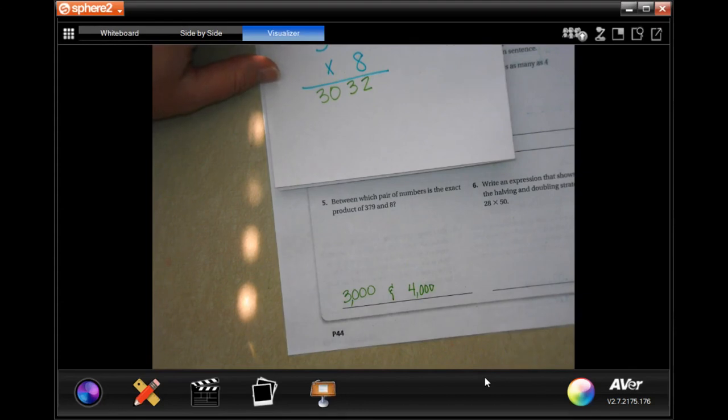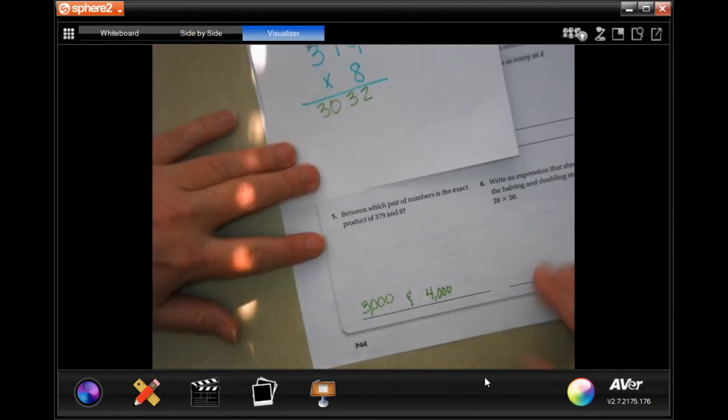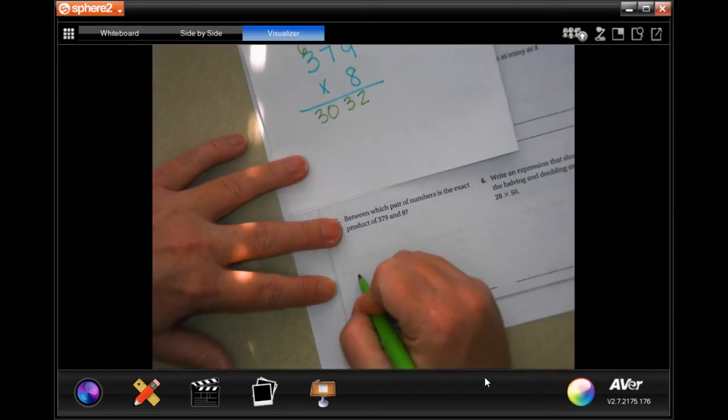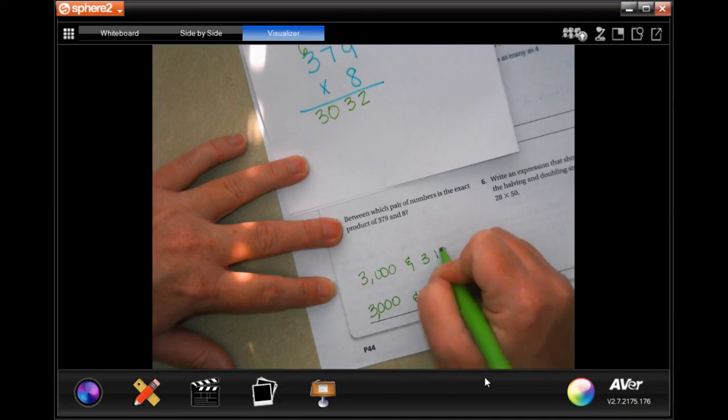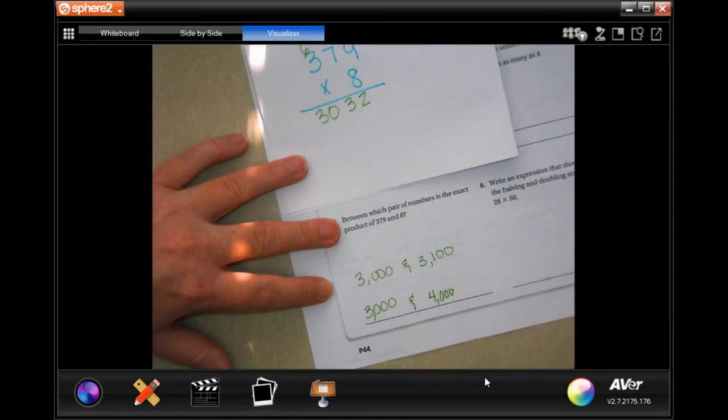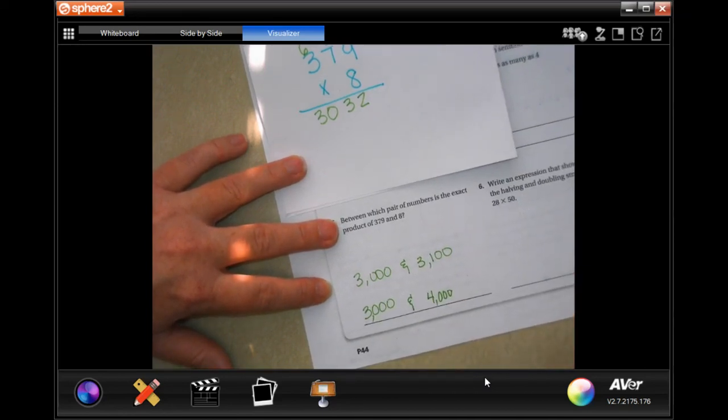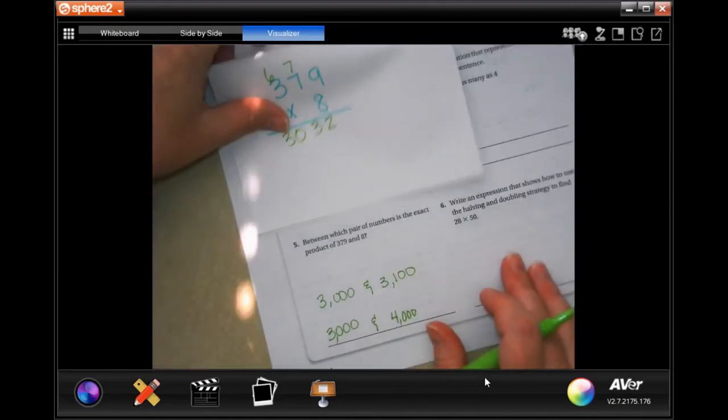There you go. Now, you could say it's between 3,000 and 3,100. That would be true as well. Anything that it's between. All right.